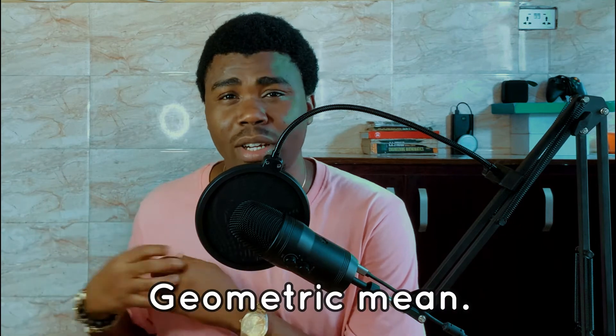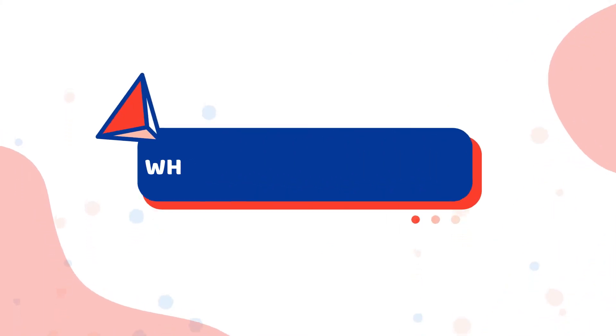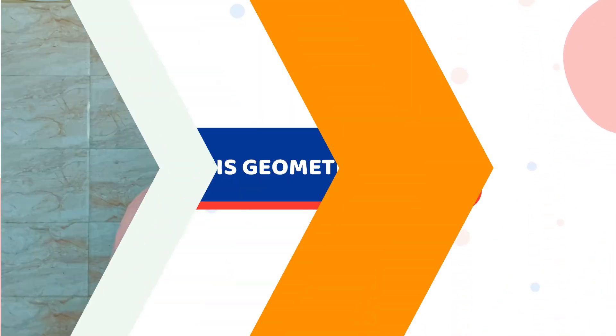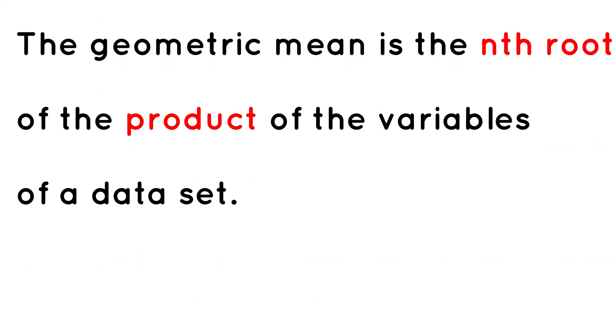In the world of statistics, we come across several types of variables, and the arithmetic mean should not be the only mean that we use to work on our dataset. This leads us to the concept of the geometric mean. In mathematical terms, the geometric mean is simply the nth root of the product of the variables we have in our dataset.